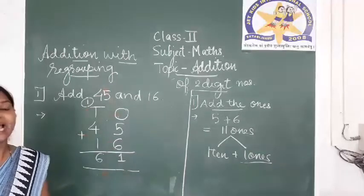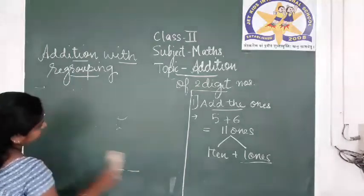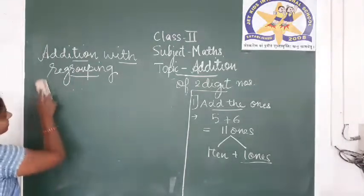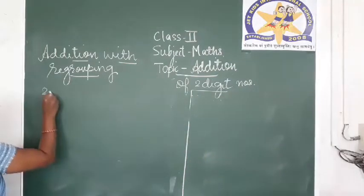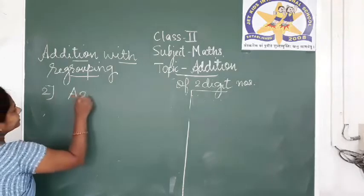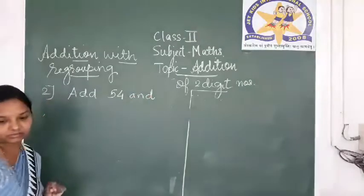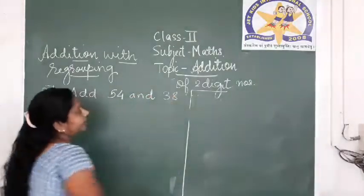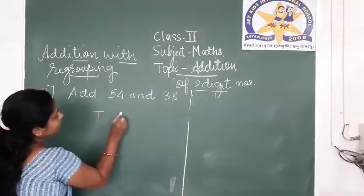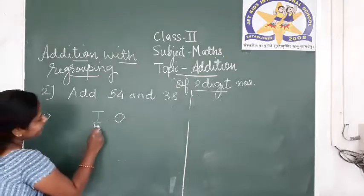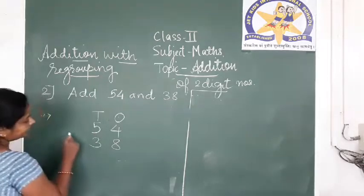In this way we add numbers with regrouping. Now let us take one more example. Second example: Add 54 and 38. First step: make the vertical columns of tens and ones. Arrange the numbers in the vertical columns — 54 and 38. Give the plus sign.